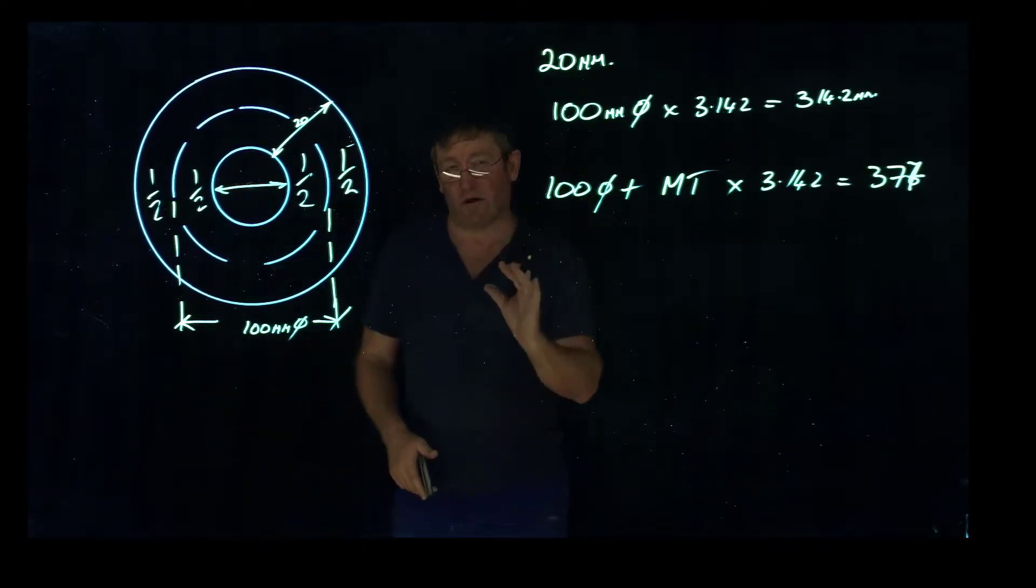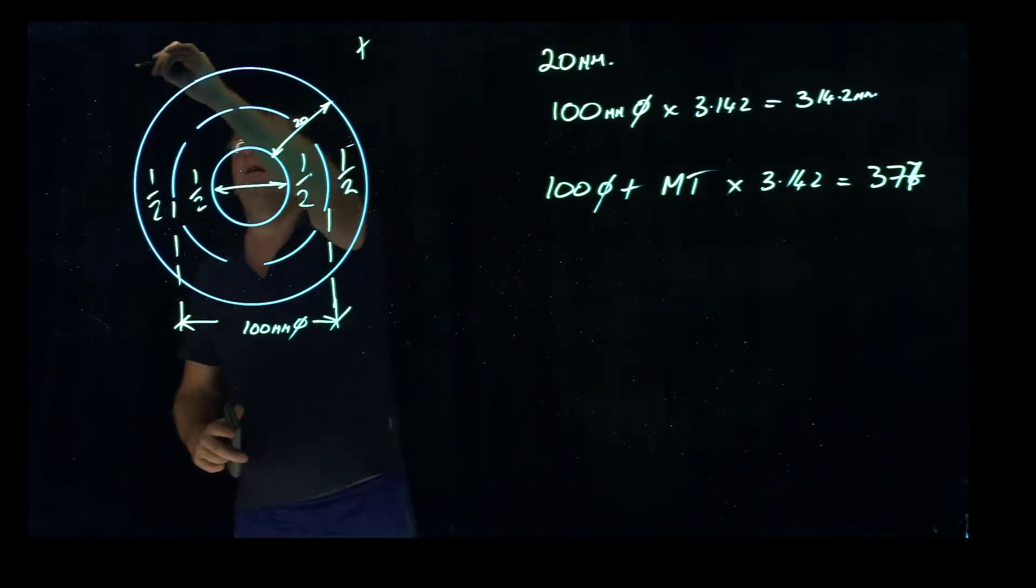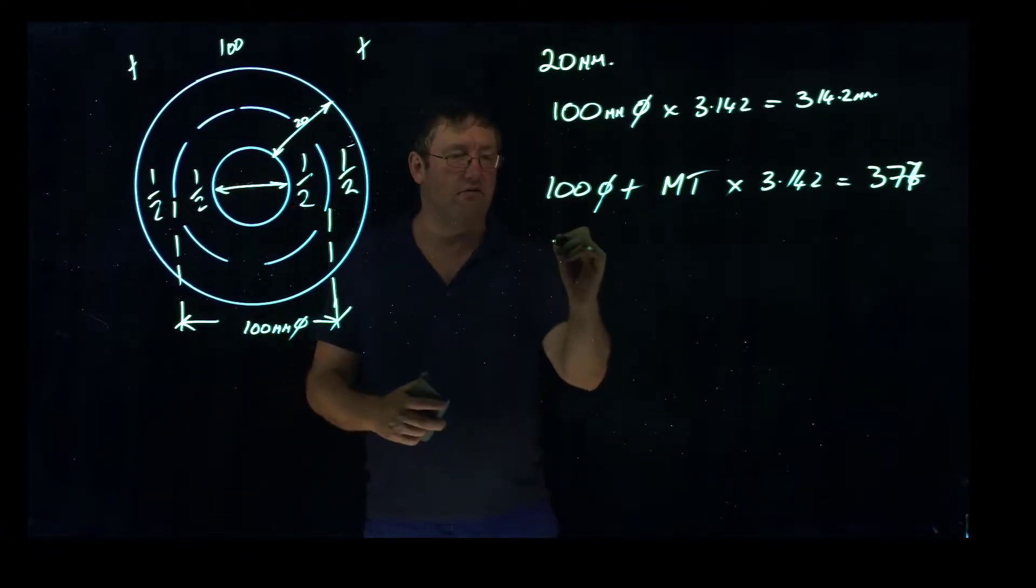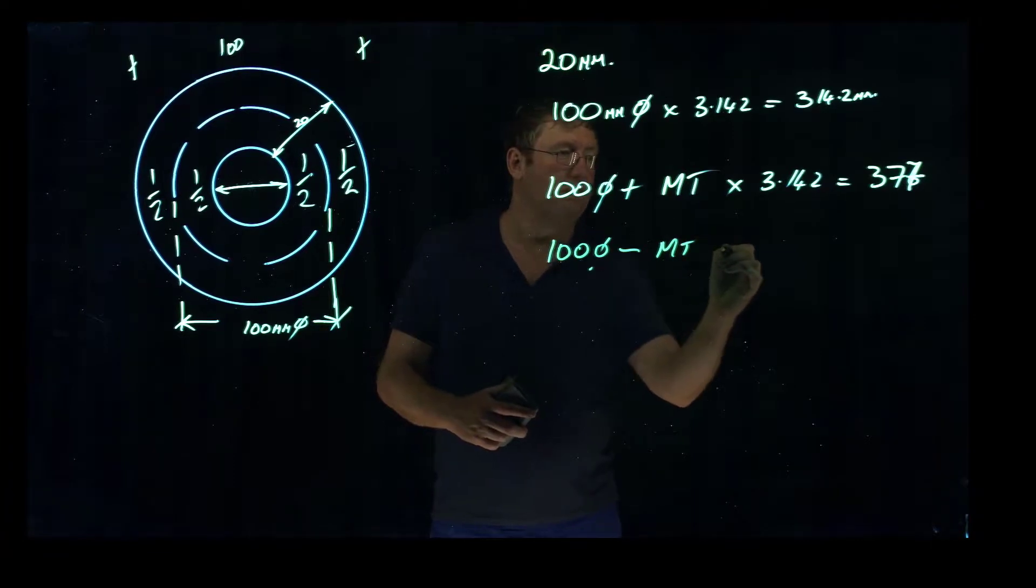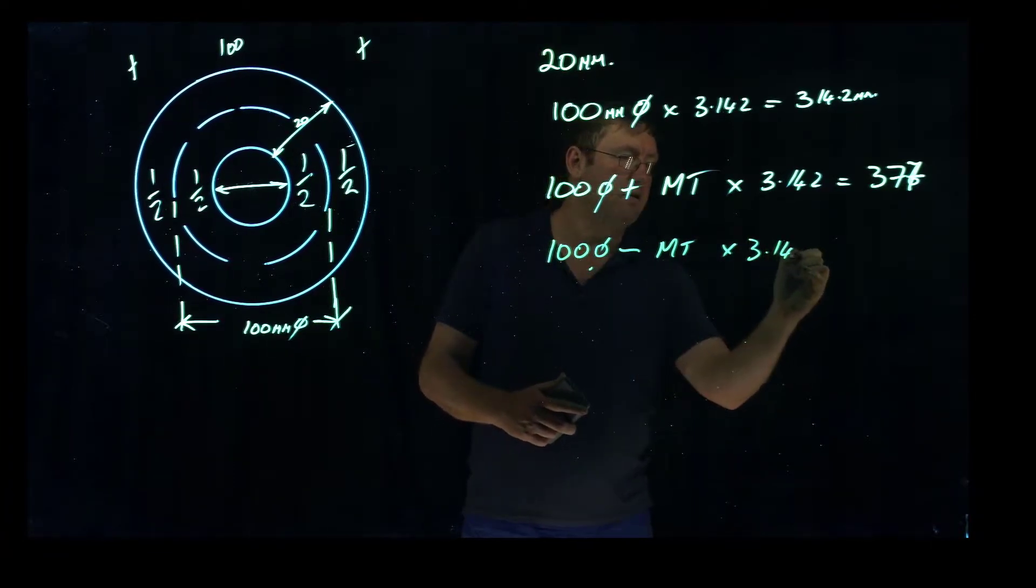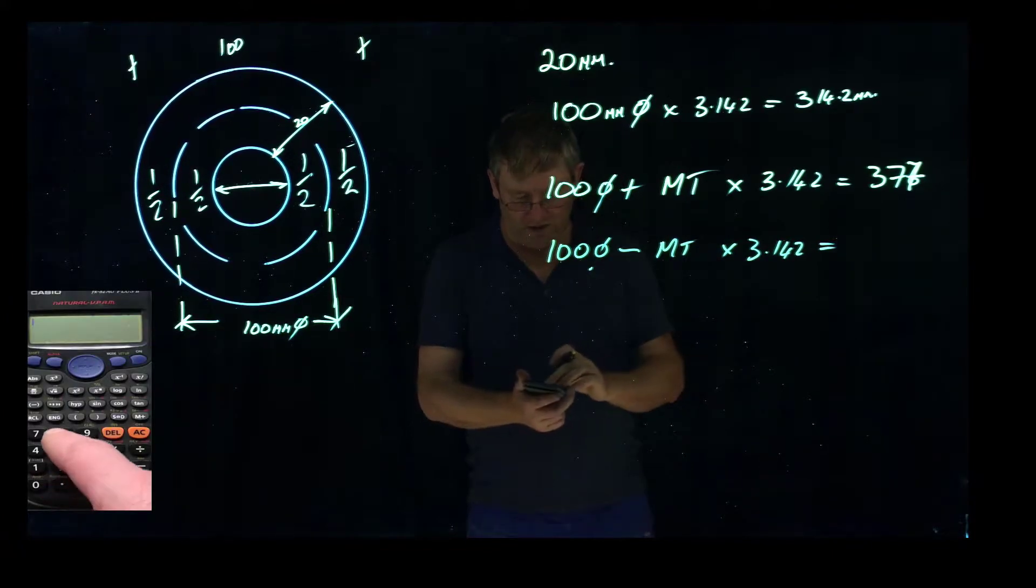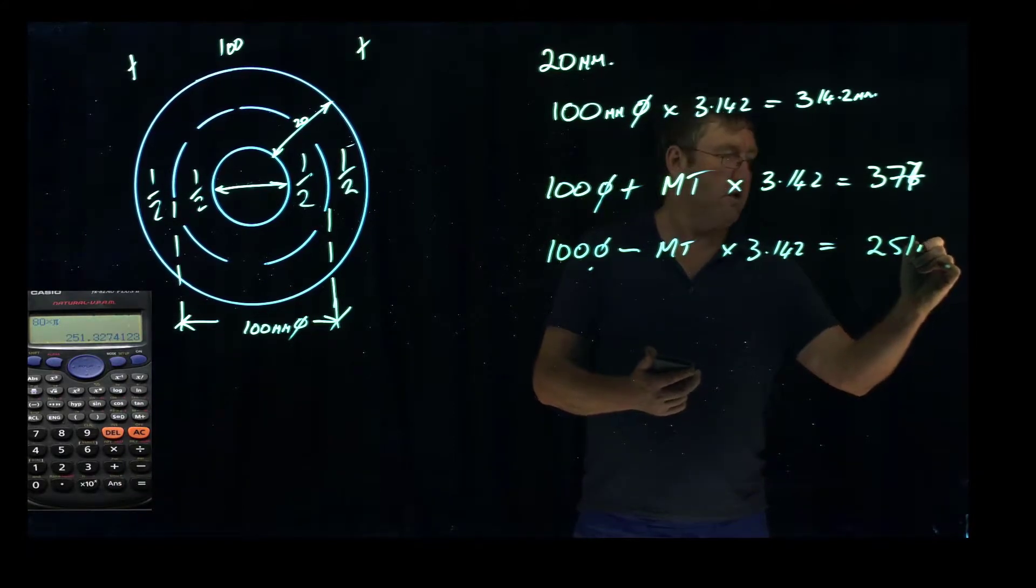Now let's say I want to go and get it to fit inside something, so it's 100mm across the outside. What do we have to do? We have to minus a material thickness now, times it by pi, and that will give us our circumference. So now we've got 100 minus 20 is 80, times pi, gives us a cut size of 251mm.